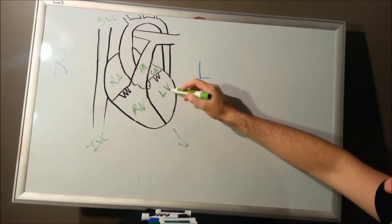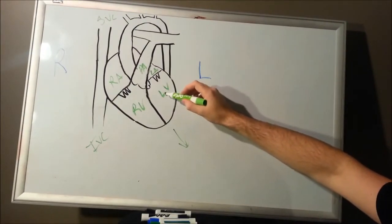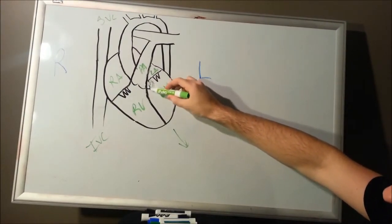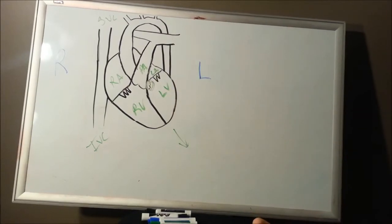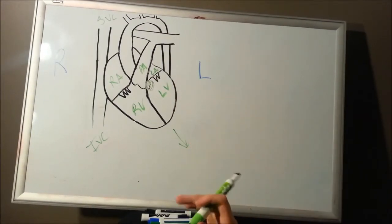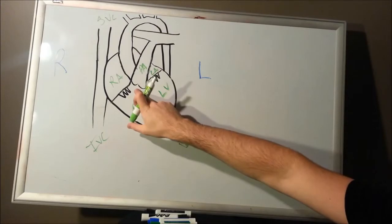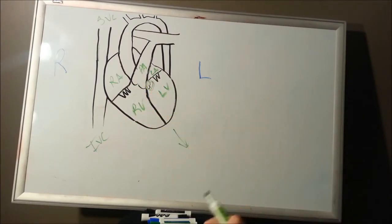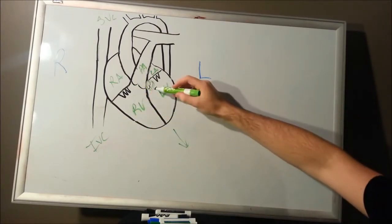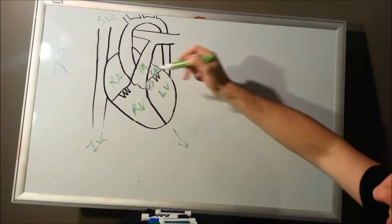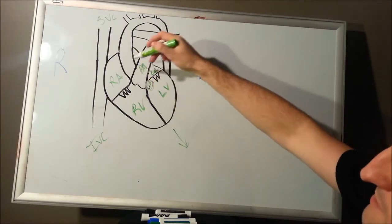So, from there, blood is going to be pumped from your left ventricle through this valve, which I kind of destroyed, but that's going to be called the aortic valve. So, you've got your pulmonic valve, and you've got your aortic valve. Your aortic valve will lead behind your pulmonic artery into, this is your aorta.